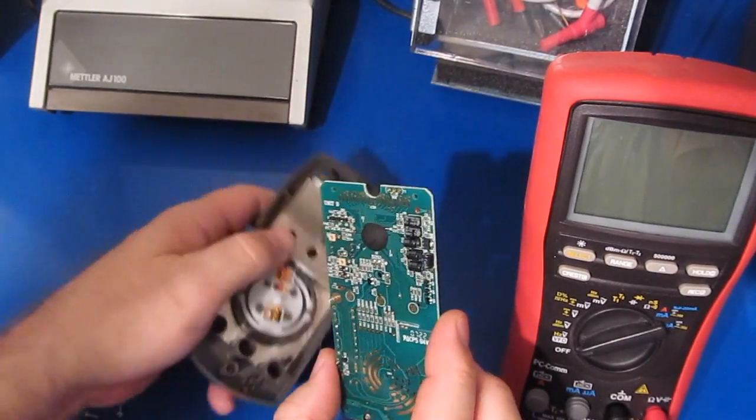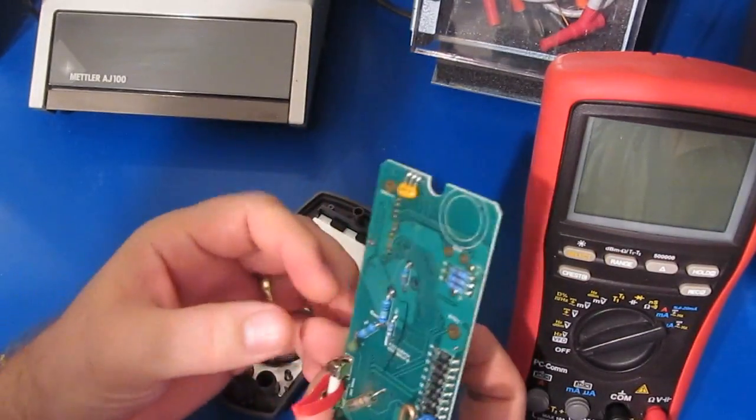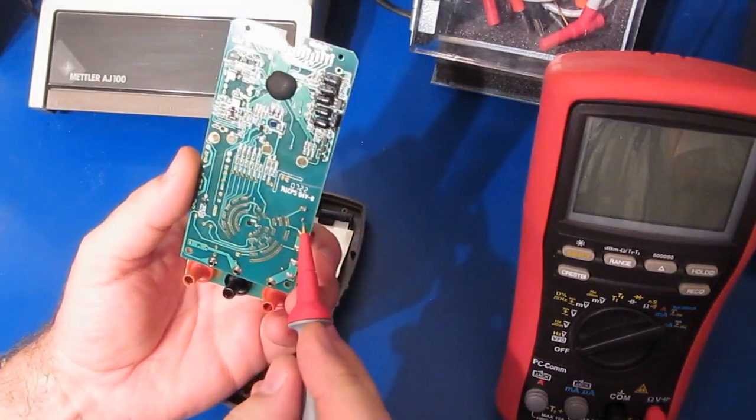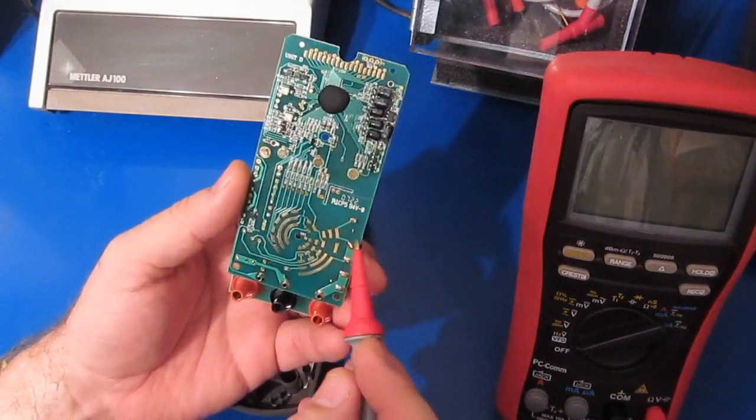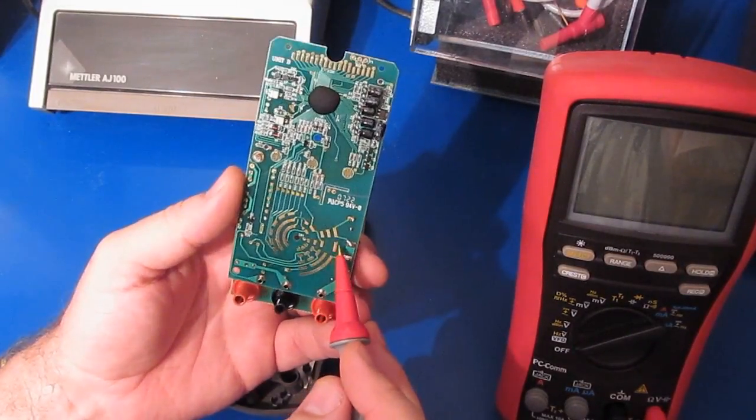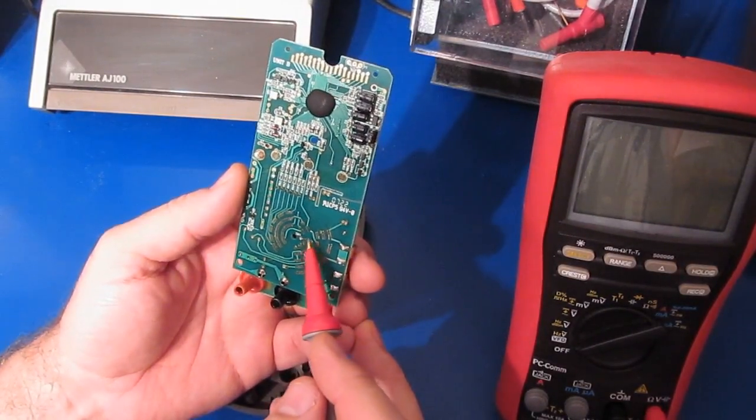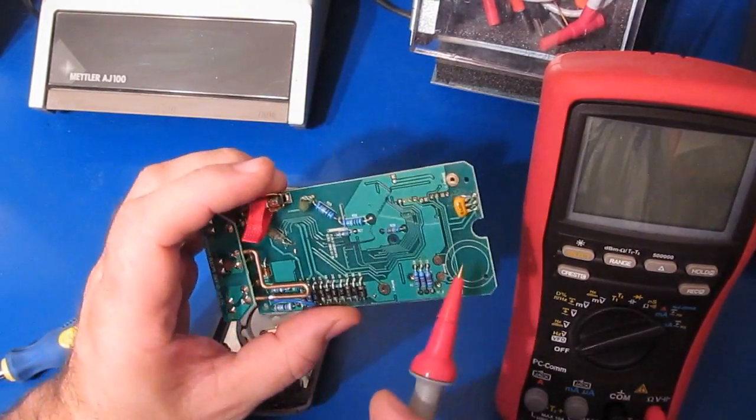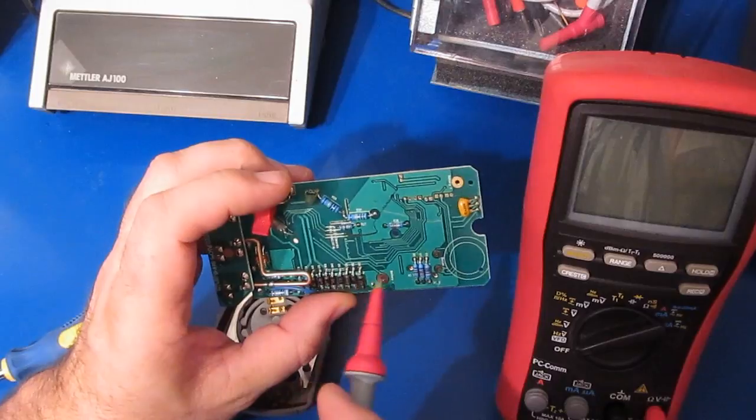But I don't see a whole lot on this thing for protection. Again you just have the PTC. The thing that would concern me is going through this PTC which is like an 800 ohm part. It goes off into this rotary switch. And I'm not seeing much in here for clamps. Maybe the diodes along here.